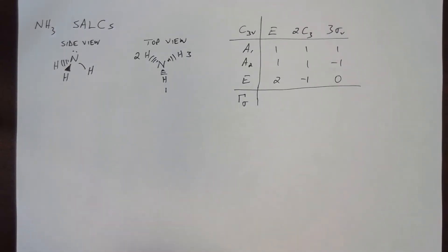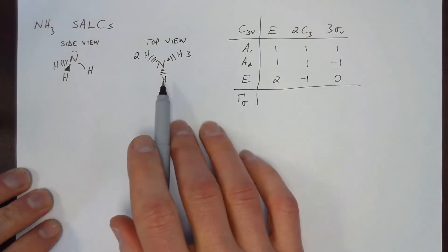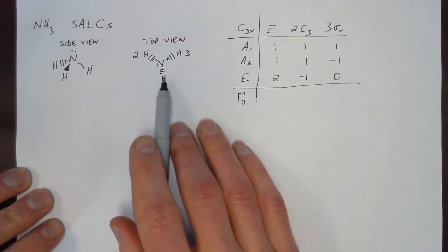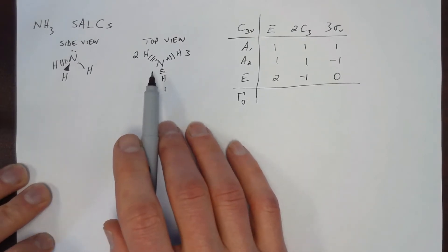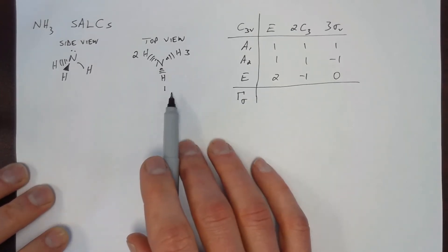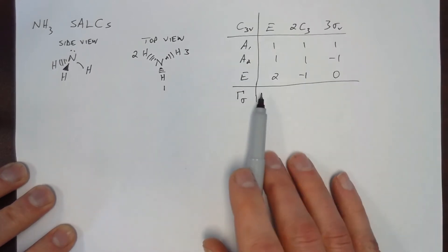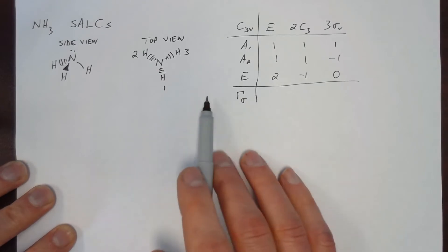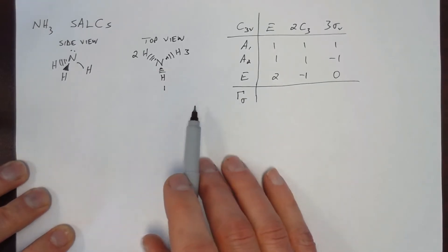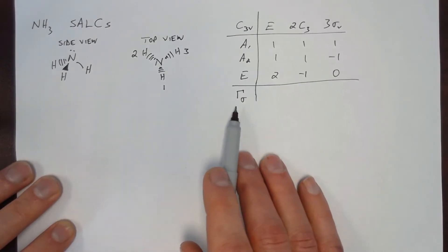We're going to look at making symmetry adapted linear combinations for the sigma orbitals in ammonia. I've already drawn ammonia here as a side view and the top view, showing the three different hydrogens. We want to construct linear combinations of the sigma orbitals for each of these hydrogen atoms. Ammonia belongs to the C3V point group, and I've already got its character table written out. We want to find the character for these sigma orbitals.